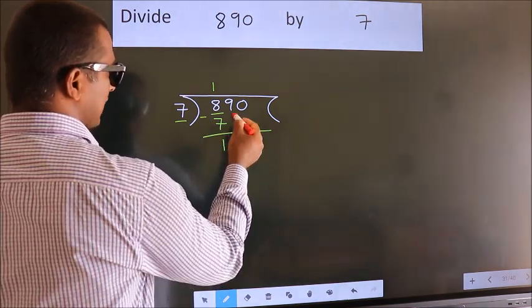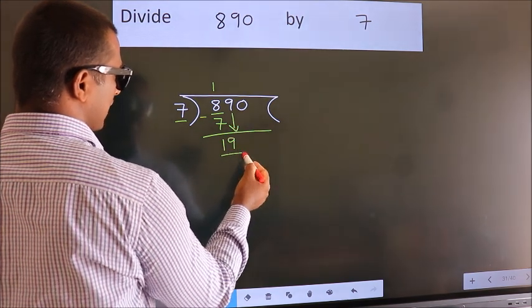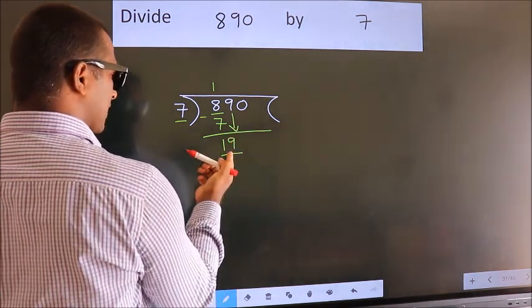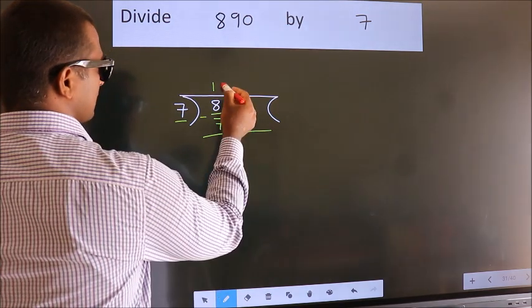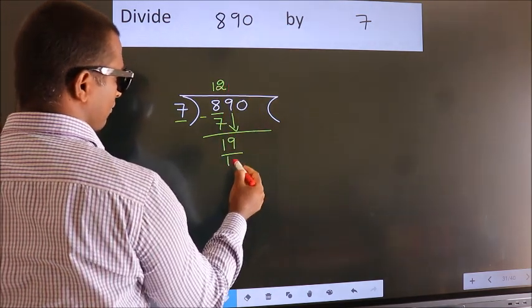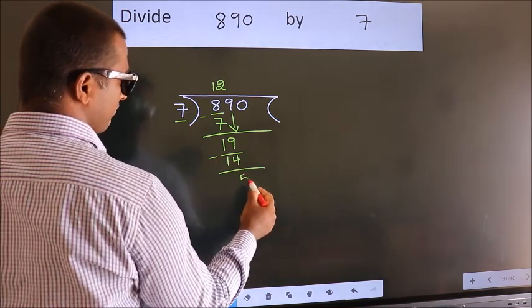After this, bring down the beside number. So 9 down, so 19. A number close to 19 in the 7 table is 7 twos, 14. Now we subtract. We get 5.